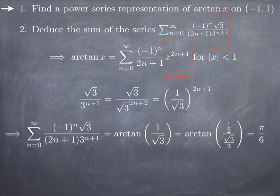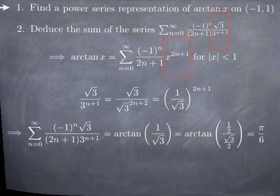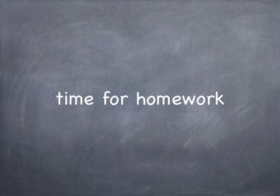So our numerical series is the value of arctan(1/√3). Now 1/√3 equals (1/2) divided by (√3/2). When the angle is π/6, sine is 1/2 and cosine is √3/2, so the tangent is 1/√3. Therefore arctan(1/√3) = π/6. It's time for you to turn to homework on power series.